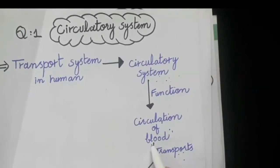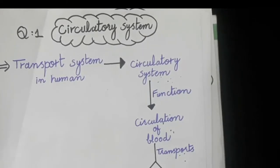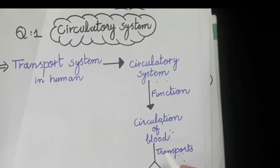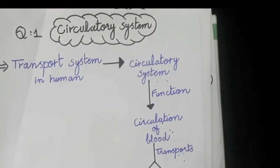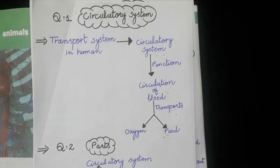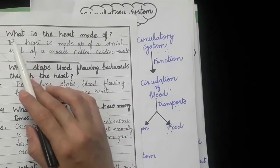The circulatory system helps to circulate the blood and it transports oxygen and food around our body. As we know, all living things need oxygen and energy for proper functioning. We get this oxygen and energy through blood circulation, and the circulatory system helps carry out that process.